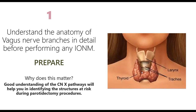Just as with the facial nerve, understanding the anatomy of the vagus nerve branches in detail before performing IOM is crucial. Good understanding of vagus nerve pathways helps identify structures at risk during thyroidectomy. Having thorough knowledge of the thyroid gland, larynx, trachea, hyoid bone, and strap muscles provides better understanding and allows more meaningful feedback to the surgeon.